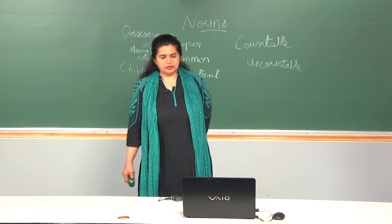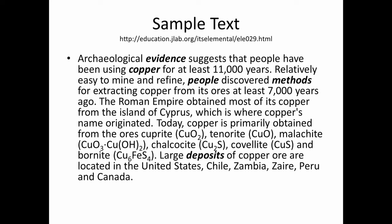Here is a sample text — look at it and we are examining countable and uncountable nouns. Please read along: Archaeological evidence suggests that people have been using copper for at least 11,000 years. Relatively easy to mine and refine, people discovered methods for extracting copper from its ores at least 7,000 years ago. The Roman Empire obtained most of its copper from the island of Cyprus, which is where copper's name originated. Today, copper is primarily obtained from ores such as cuprite, tenorite, malachite, chalcosite, covalite, and bornite. Large deposits — one deposit, several deposits — are countable.